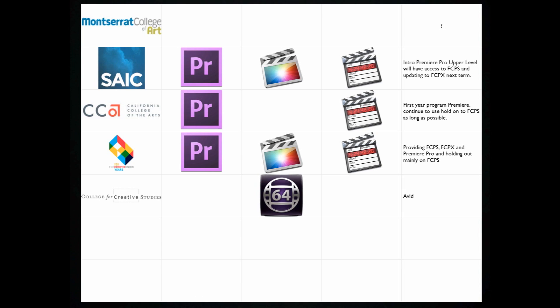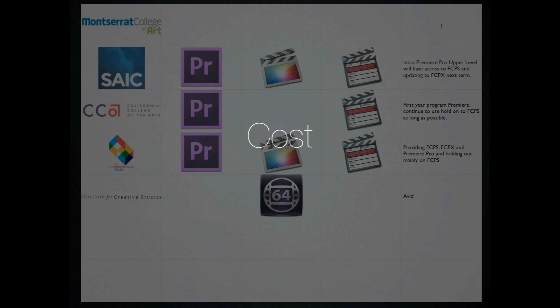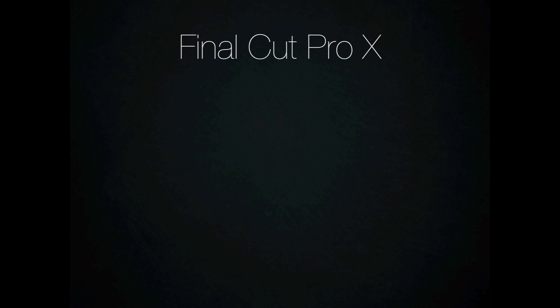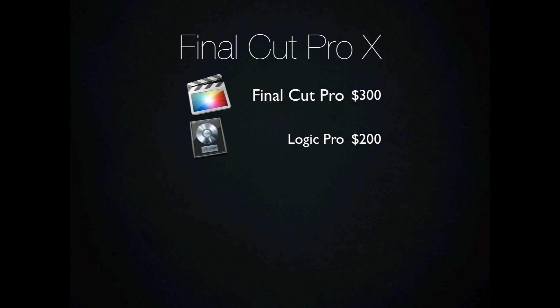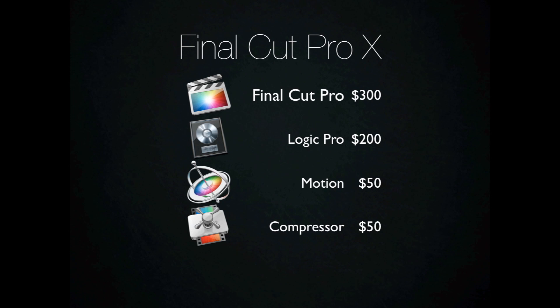Now let's talk about cost. Final Cut Pro 10 is available from the Mac App Store at $300 with no educational discount. We would also need Logic Pro for audio at $200 from the Mac App Store, for a total of $500. If we wanted to add Motion or Compressor, those are $50 each, bringing the total to $550 or $600.